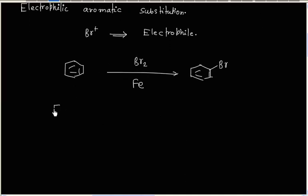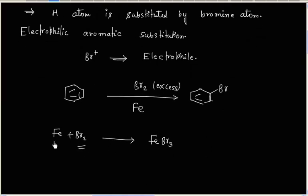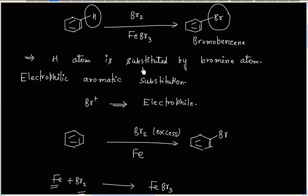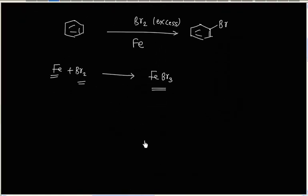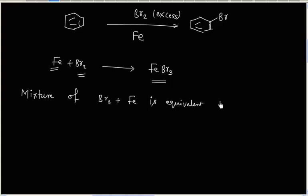Fe and bromine react to form FeBr₃. In this case, we have to take bromine in excess, so that some of the bromine reacts with iron to form FeBr₃ and some bromine is left over. This mixture of bromine with Fe is equivalent to a mixture of Br₂ plus FeBr₃.